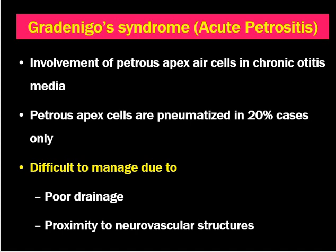Why is this topic important? This is important because the condition is difficult to manage due to poor drainage of secretions and proximity of the petrous apex to neurovascular structures — the fifth nerve, sixth nerve, and internal carotid artery all lie near to it.